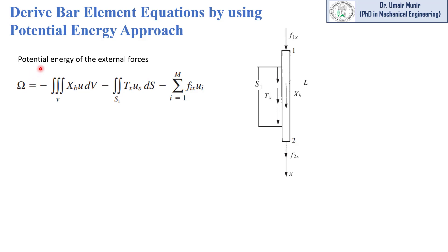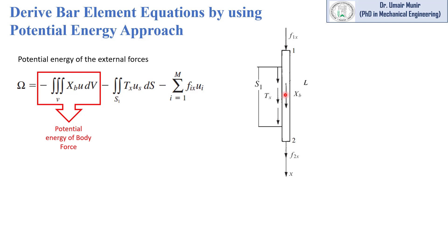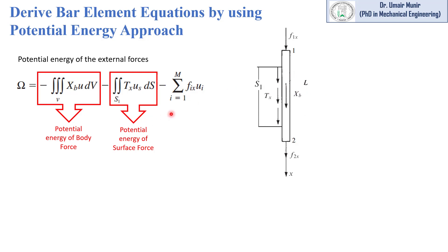The second term in the total potential energy equation is omega, the potential energy of the external forces. There are three types of forces acting on a bar element. The first is the body force, which is the weight of the body acting on the whole body — a negative sign is placed with it because work done by this force is stored as potential energy. The second is the surface force (pressure), and the third is the nodal force.